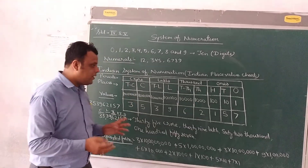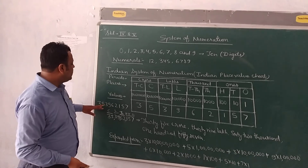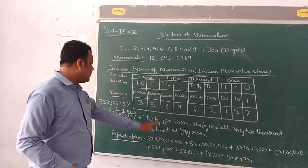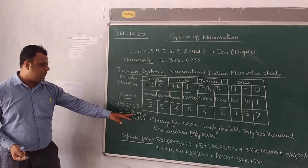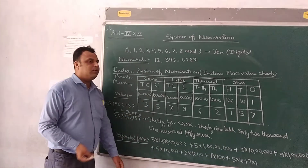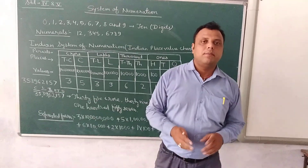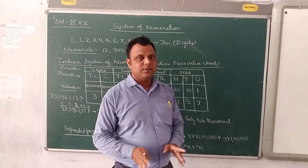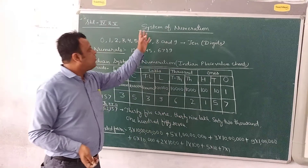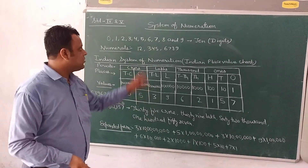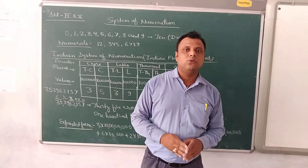When we have to write any number in words, first we write the digits according to the chart, then we put commas between the periods, and then we write the number in words. We can also write the expanded form of any number. In the next video I am going to explain the international system of numeration. So wait for that. Thank you. Have a nice day.